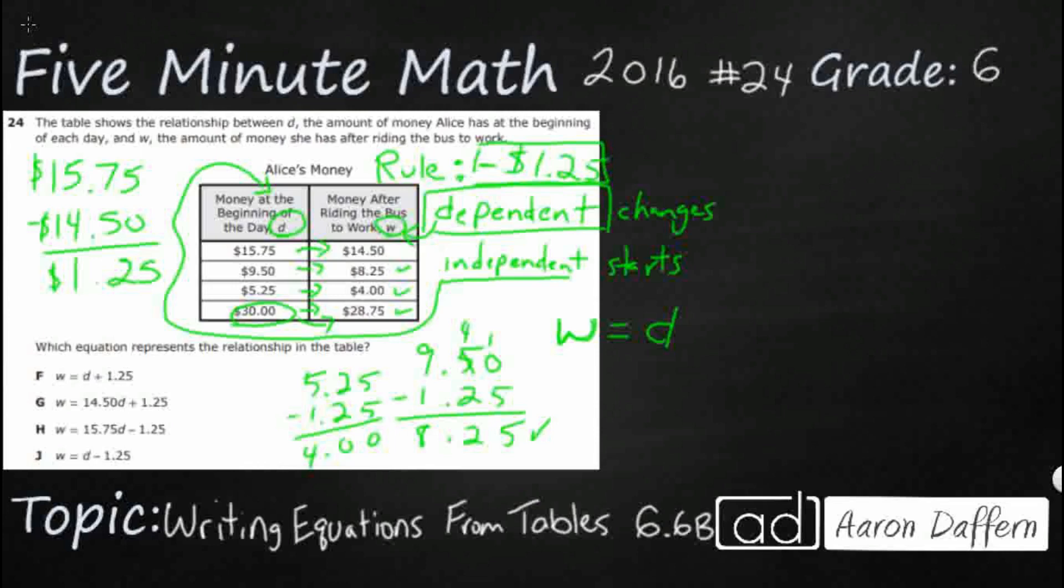So we start the day. We take away 125. And then this turns into our dependent variable, because we change it based on that bus fare. And so our answer is going to be J.